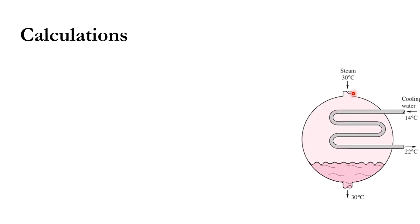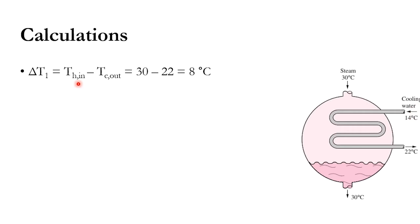In the schematic, steam enters and leaves at 30°C — only a phase change is involved, so the heat released is latent heat. That latent heat is gained by the cooling water, whose temperature increases from 14°C to 22°C. Since it is a counter-flow system, delta T1 = T_H,in − T_C,out = 30 − 22 = 8°C.